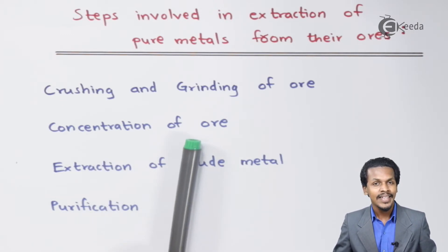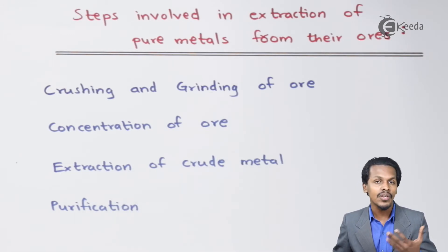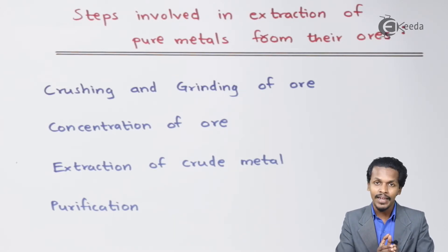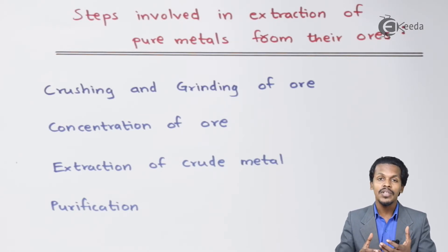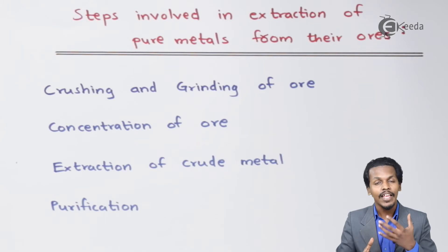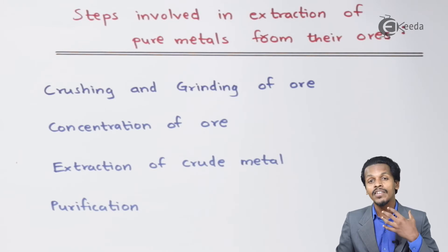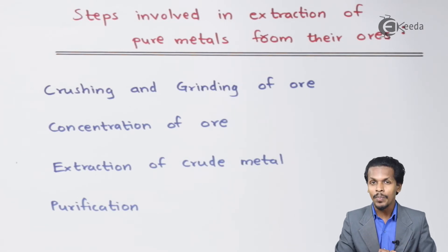Talking about the next point, that is extraction of crude metal from its concentrated ore. In this case we have to extract the main metal. But the metal obtained by this process will not be pure, and because of that we get a crude metal. This is a very important step where we use certain agents and processes after the concentration of ore so that we can obtain the crude metal.